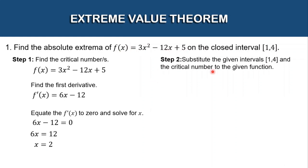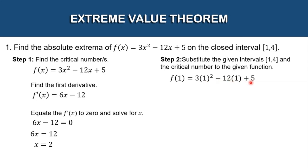If x = 1, we have f(1). Replacing all x in the given function with 1: 3(1²) − 12(1) + 5. Simplifying this, the answer is −4.